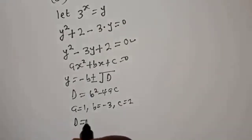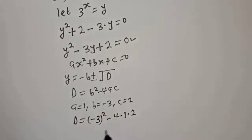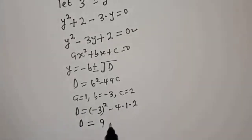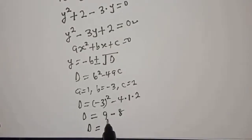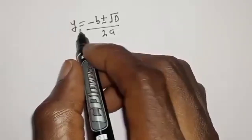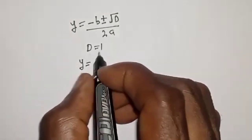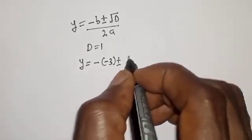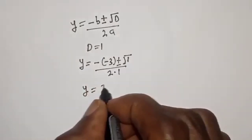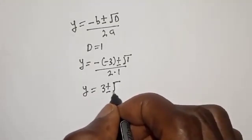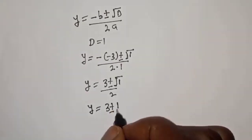Then d is equal to negative 3 squared minus 4 multiplied by 1 multiplied by 2, which is 8. So d is equal to 9 minus 8, which is 1. Then y is equal to negative b plus or minus square root of d, over 2a, which gives negative of negative 3, plus or minus square root of 1, over 2.